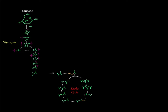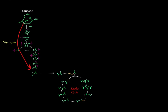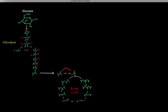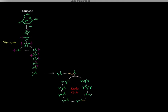In previous videos, we learned that we can take glucose molecules to enter through glycolysis, which produces pyruvate molecules. The pyruvate molecules can then enter the mitochondria and be converted into acetyl-CoA to enter the Krebs cycle. Glycolysis and the Krebs cycle are collectively referred to as central metabolism.